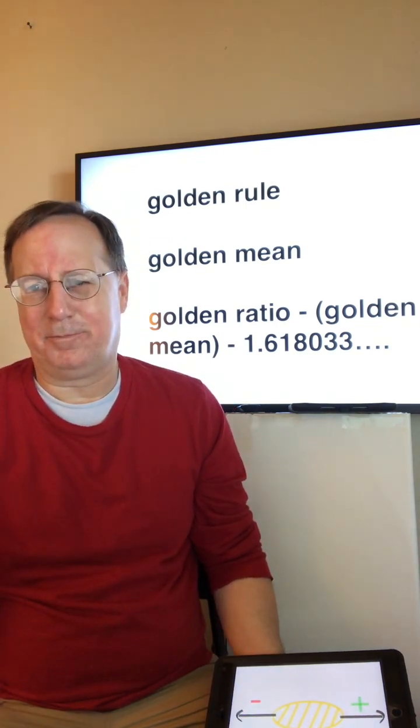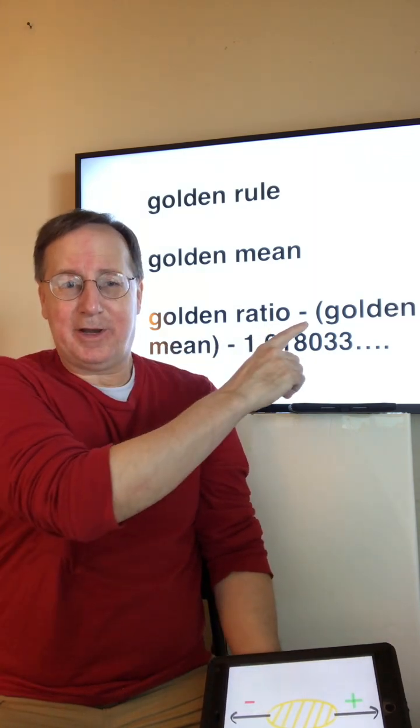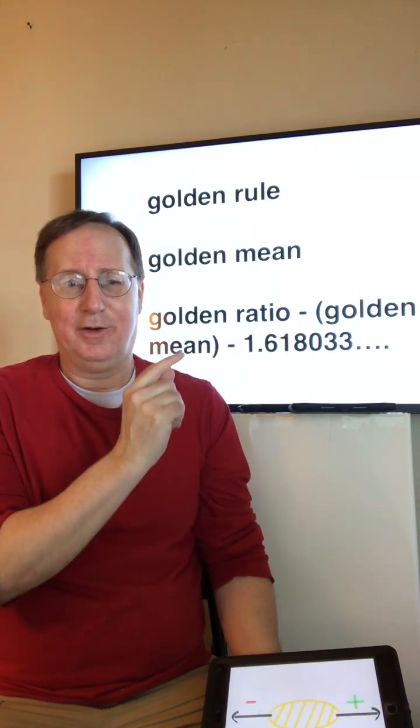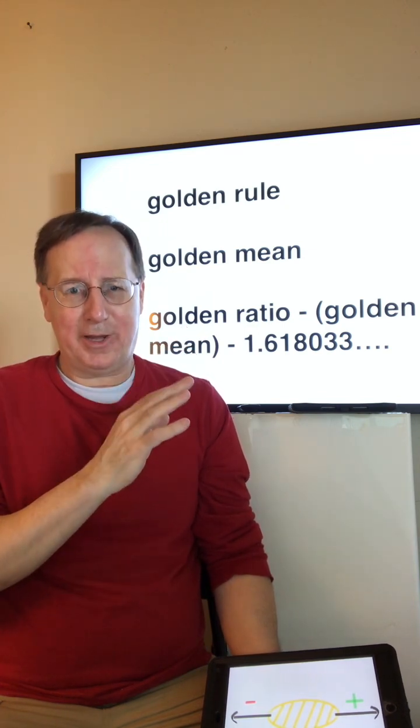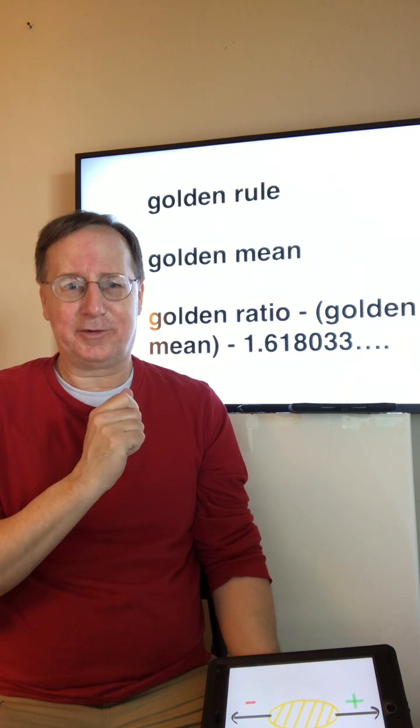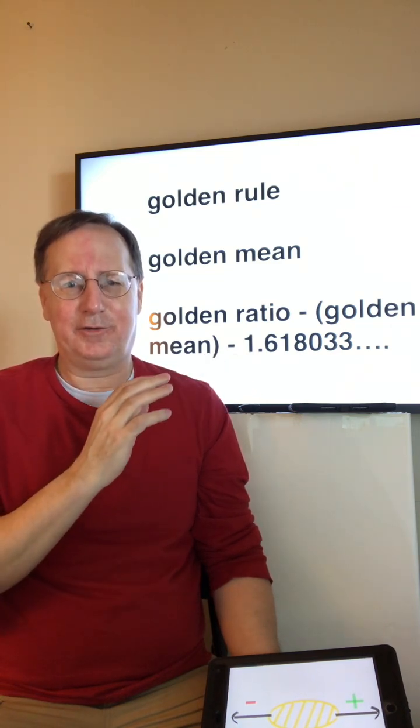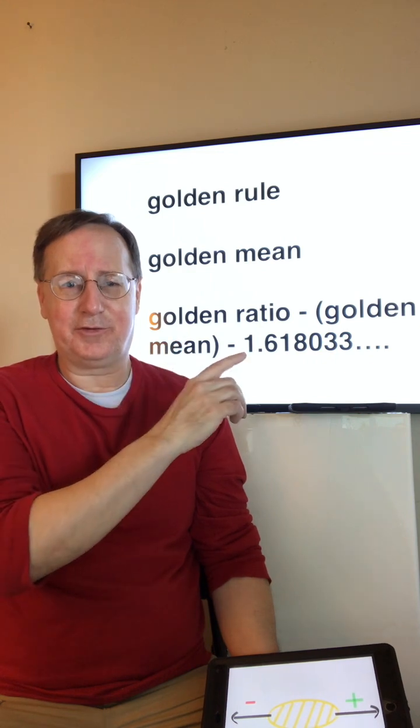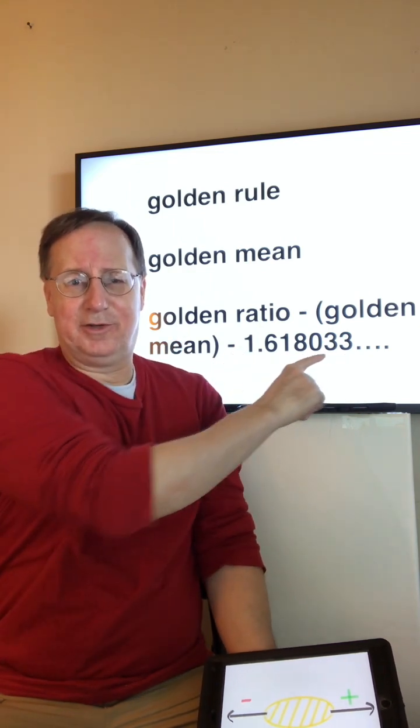Now, Golden Ratio is sometimes called Golden Mean. The Golden Ratio is a specific mathematical scientific concept and number. This is the ratio, the exact ratio: 1.618033... and the number continues on.